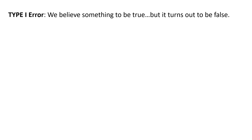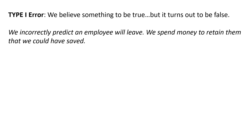There are four types of statistical errors, but two are of interest here. The first is a Type 1 error — this occurs when we believe something to be true but it turns out to be false. In this context, we make a Type 1 error if we incorrectly predict that an employee will leave. This has real business consequences if you're using the model to drive retention spending, because each Type 1 error comes with a dollar cost — money spent trying to retain someone who never meant to leave. Type 1 errors are more commonly known as false positives.